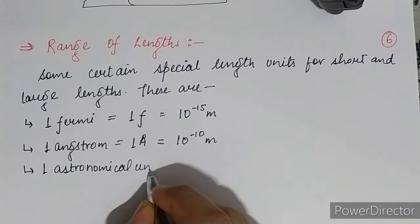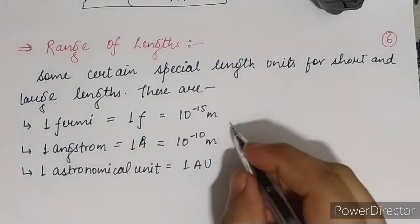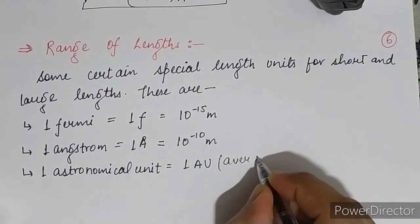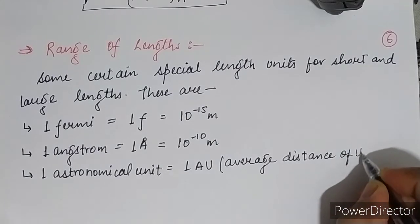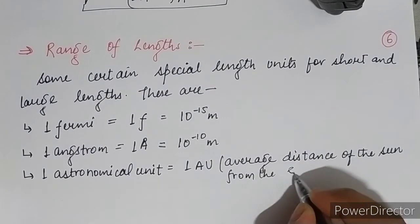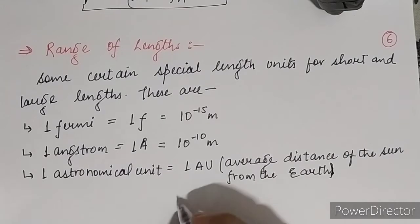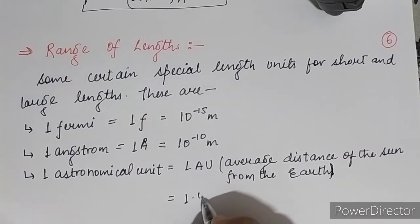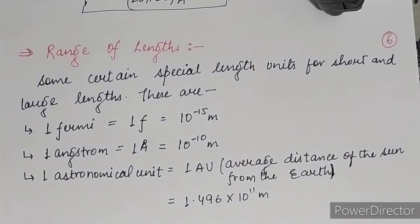Next we have the astronomical unit, abbreviated as AU. The astronomical unit means the average distance of the Sun from the Earth. Its value is 1.496 × 10 to the power 11 meters. Since it represents the average Earth-Sun distance, it is a very large distance.